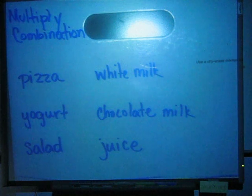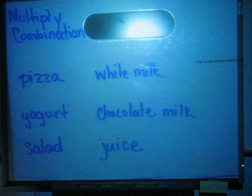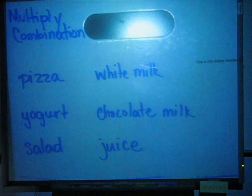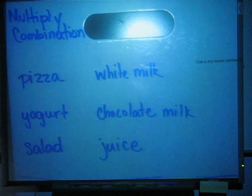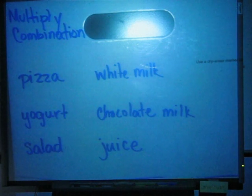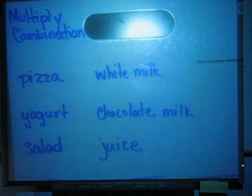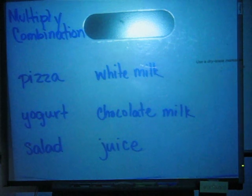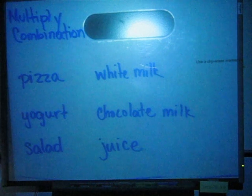This video is about multiplying combinations. Combinations is a skill that we have a lot of difficulty with, so we're going to go over it. Combinations is finding out how many ways we can put something together — in this case, how many different ways we can have lunch.